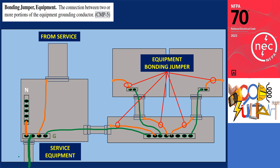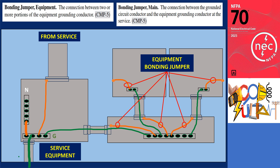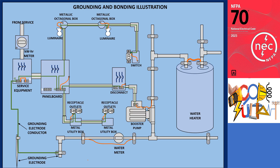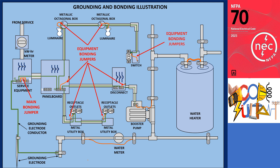The main bonding jumper is the connection between the grounded circuit conductor and the equipment grounding conductor at the service. In one of our illustrations, the bonding jumper that links the equipment ground bus and the neutral bus serves as an example of a main bonding jumper. Sometimes the grounded conductor is linked to the grounding electrode conductor. It's important to differentiate between an equipment bonding jumper and a main bonding jumper. The main bonding jumper is located in the service equipment, while equipment bonding jumpers are installed on the load side of a service, feeder, or branch circuit overcurrent device.